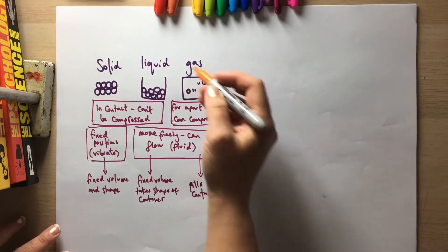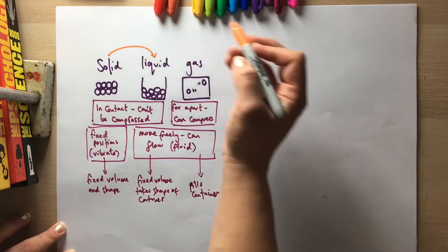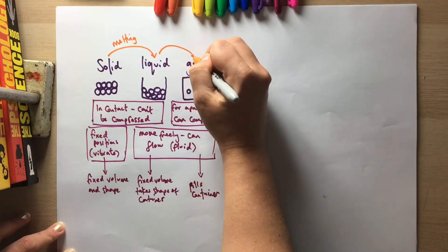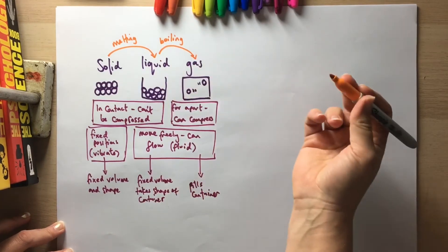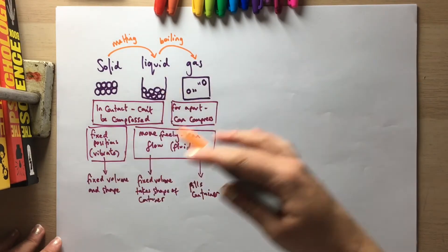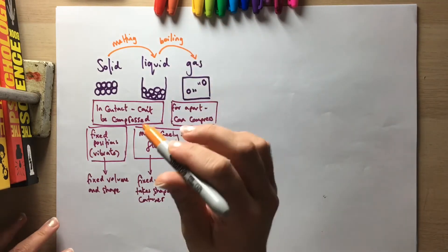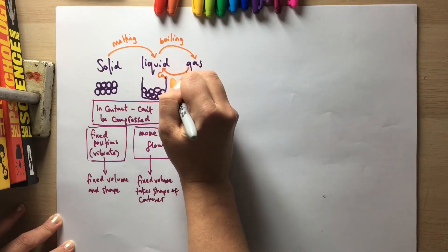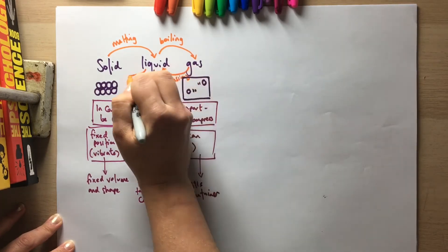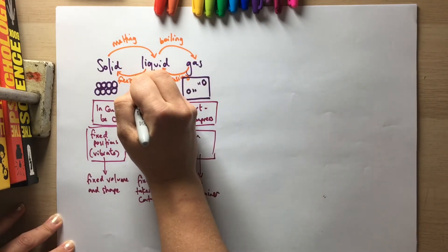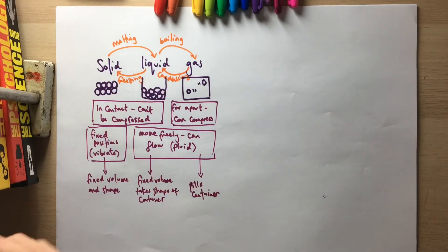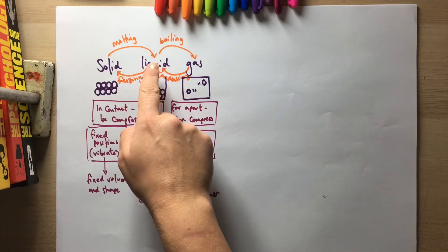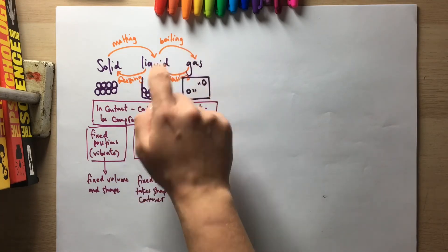You also need to know the names of the changes of state. Going from a solid to a liquid is called melting. Going from a liquid to a gas is called boiling, which happens at a specific temperature called the boiling point. Evaporation also happens but over a range of temperatures. A gas turning into liquid is condensing, and a liquid into solid is freezing. The melting point is the temperature at which it turns from solid to liquid, and the boiling point is the temperature at which it turns from liquid to gas.